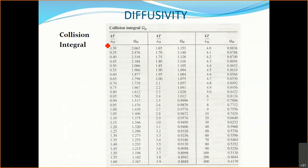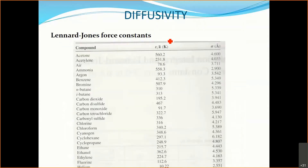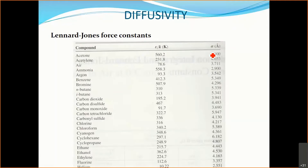In order to find the value of omega_d, you need to know the value of kT/ε_AB. To find kT/ε_AB, you need to find the value of ε/k for each component in your system. If you have air and benzene, air and argon, or ammonia, you can find these values in the appendix tables, which also give you the value of sigma for each compound.